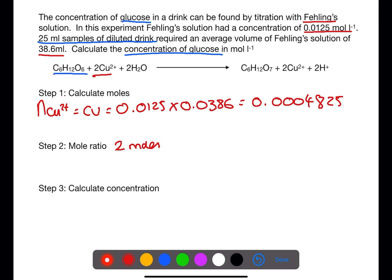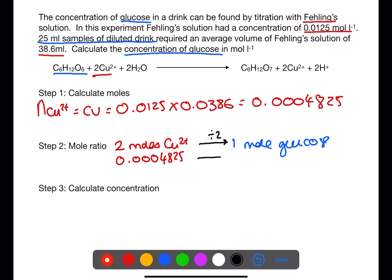Now that you have the number of moles of copper ions you can use the mole ratio from the equation. This is two moles of copper ions would react with one mole of glucose. We don't have two moles of copper ions — we have 0.0004825. To go from one side to the other we need to divide by two, giving us the number of moles of glucose as 0.00024125.